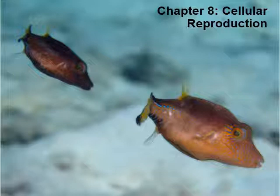Hello class, this is Dr. Lyons again. In this chapter we're going to be talking about cellular reproduction. I don't have any pictures of cellular reproduction, but I do have a picture of these two cute fish — sharp-nosed puffer fish. Because they're members of the puffer family, when they get scared they puff up, but these fish are only about an inch long so it's pretty adorable.